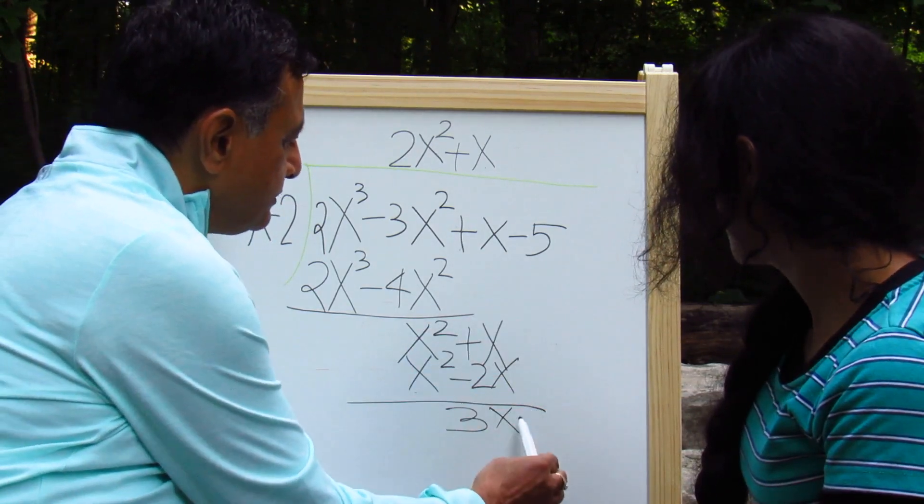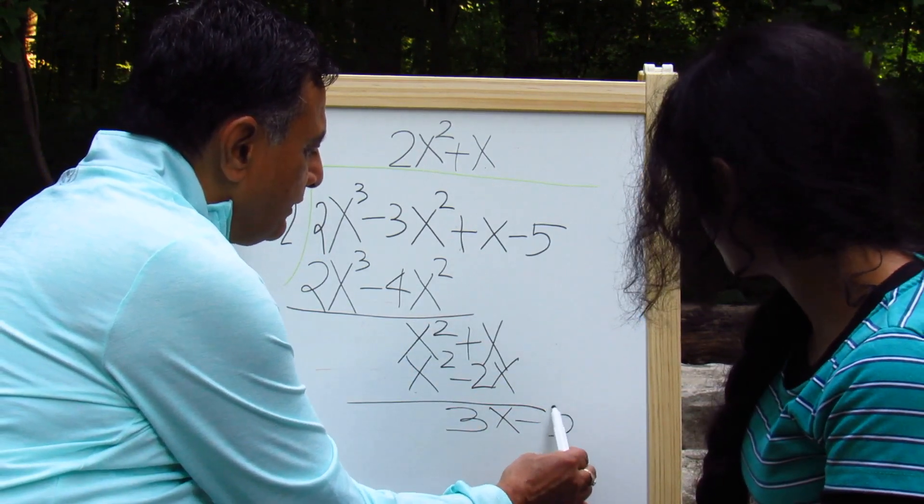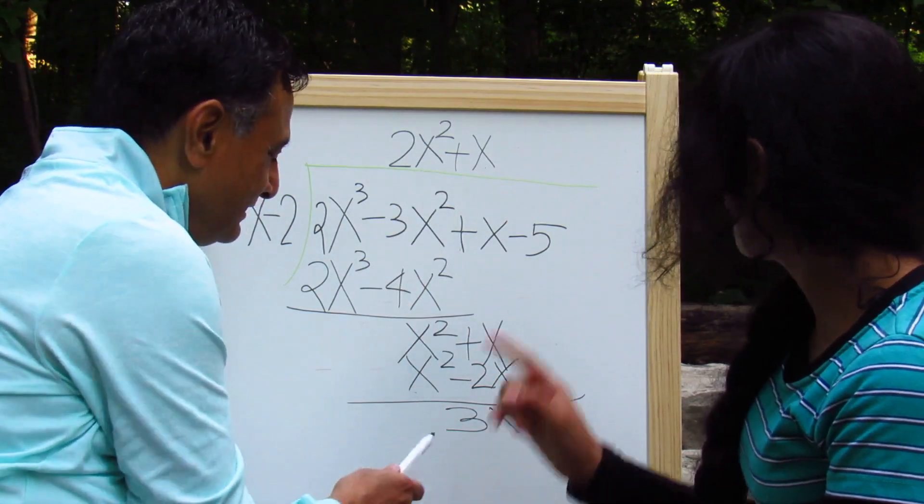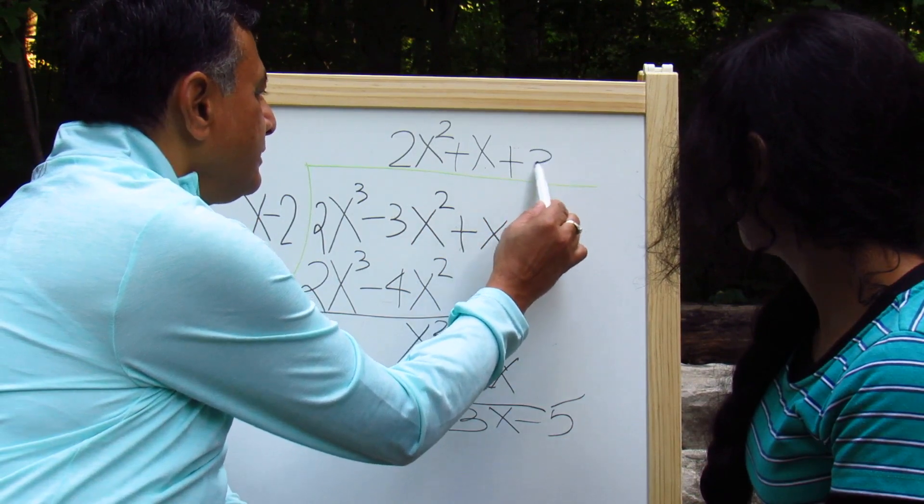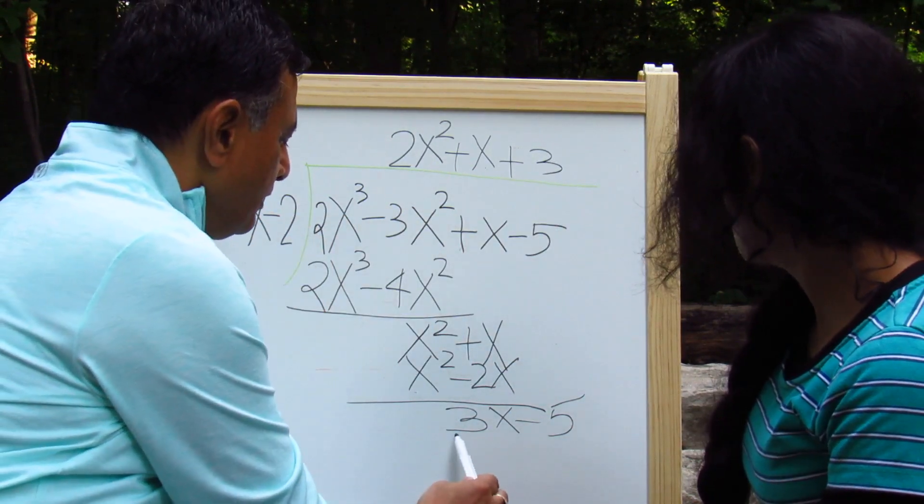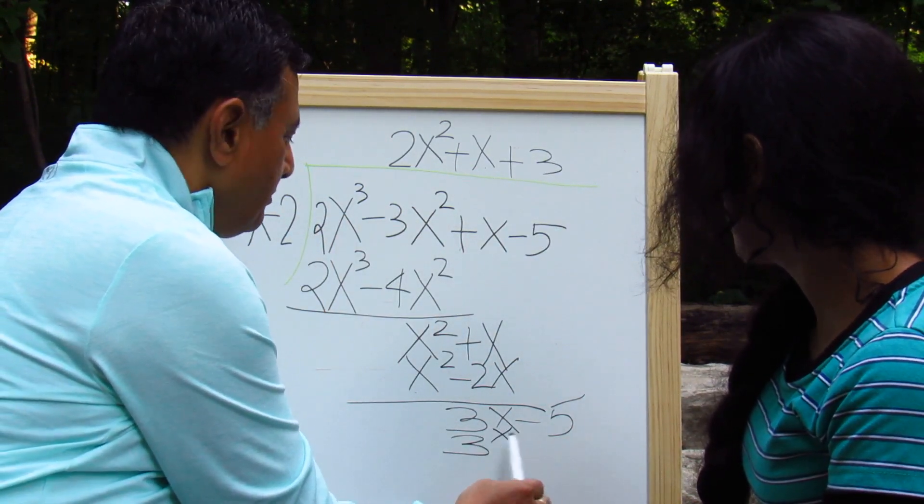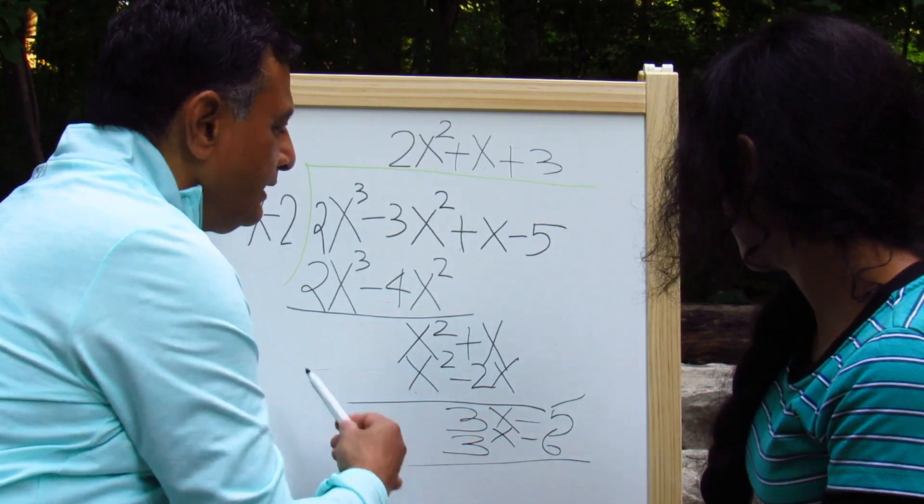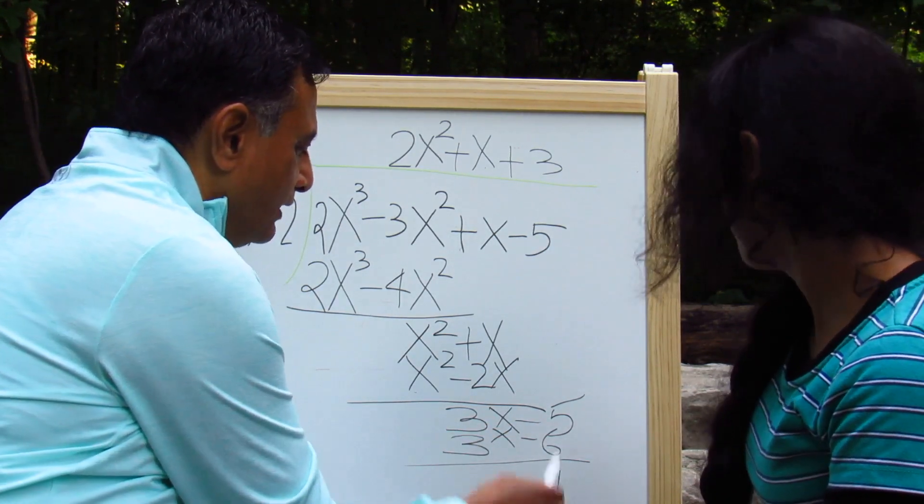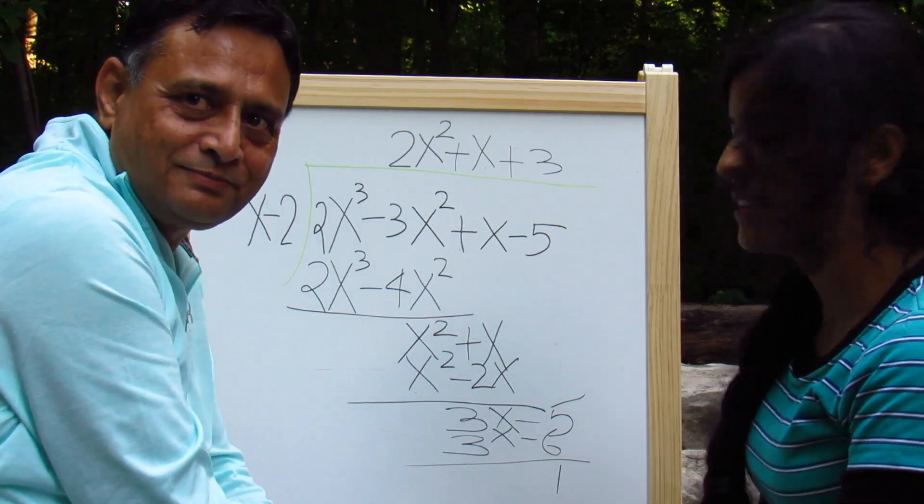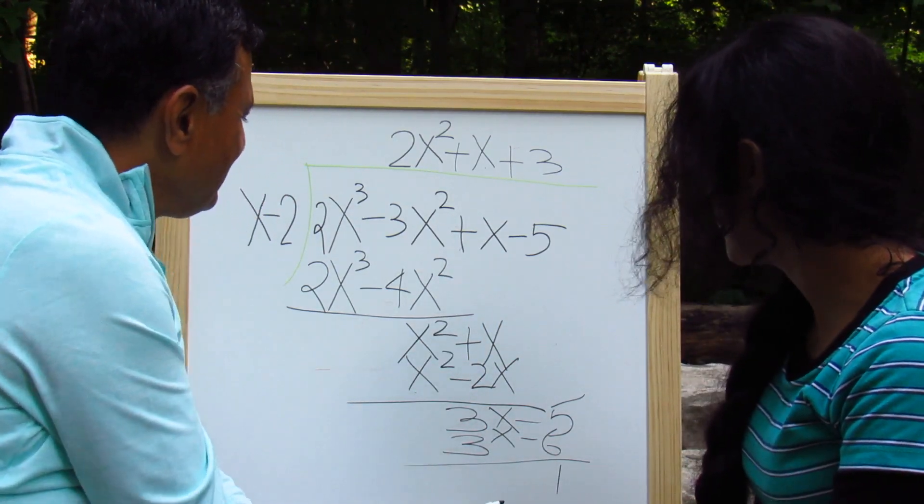Now bring down the next term, which is minus 5. So what should go there? It would be 3. Just the number 3. So we get plus 3 here. So when you multiply by 3, we get 3x minus 6. And the remainder will be? So it would be minus 5 plus 6. 1 would be your remainder. So we get remainder 1.